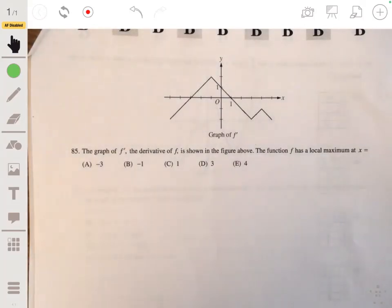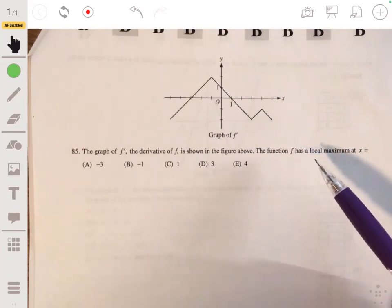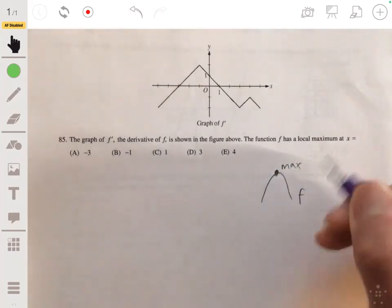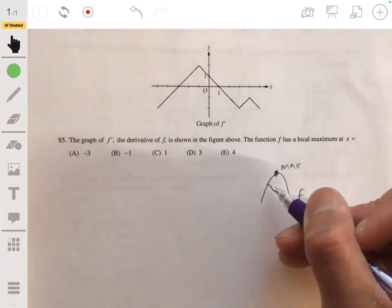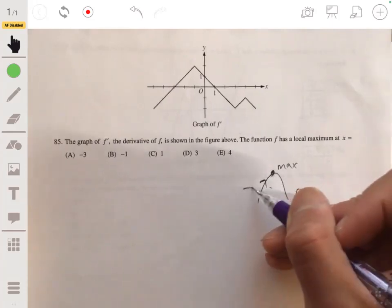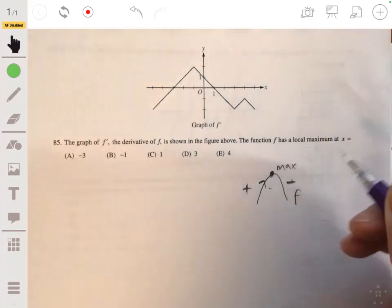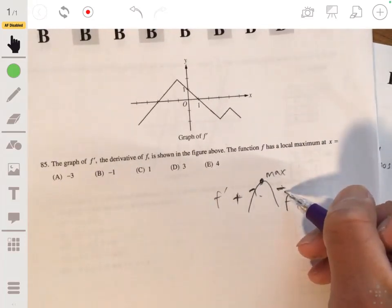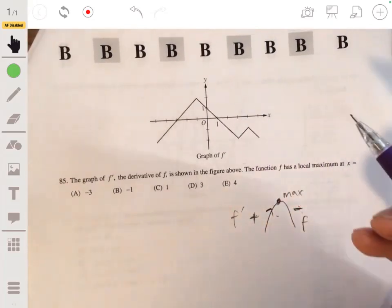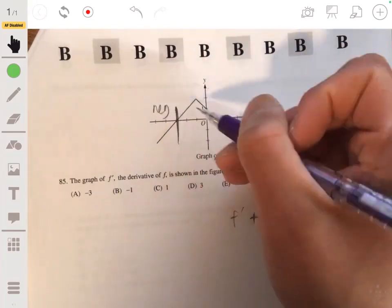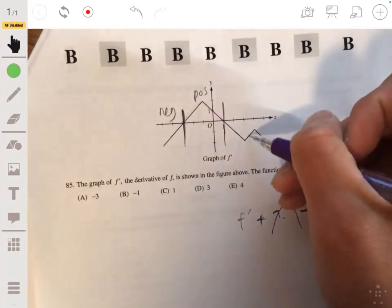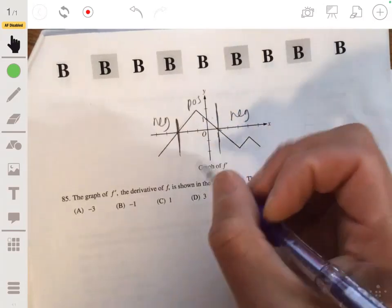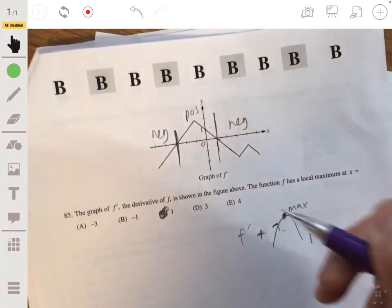85, we're given the graph of f prime, and we want to find where the function f has a local maximum. So remember, a local maximum, let's say this is a local maximum graph of f, occurs when the graph of f changes from having a derivative that's increasing or being more positive to the derivative being negative. So f prime is positive, and f prime will be negative on this side. So let's see where the graph of this f prime goes from positive to negative. So see, up to here, it's negative. Then from here, all along here, it's positive. Then it's negative after that. So it goes from positive to negative at x equals 1. And so our answer is simply c, which is c1.